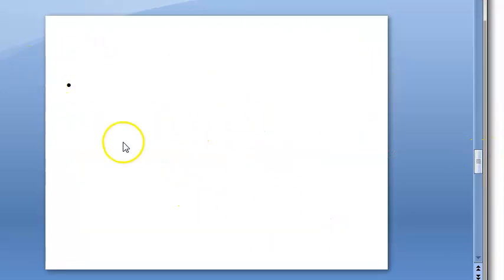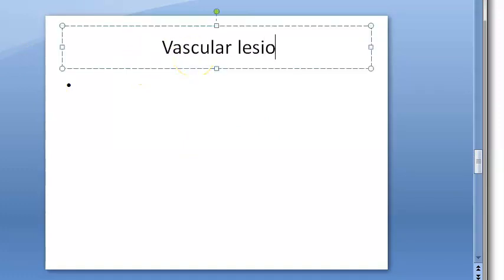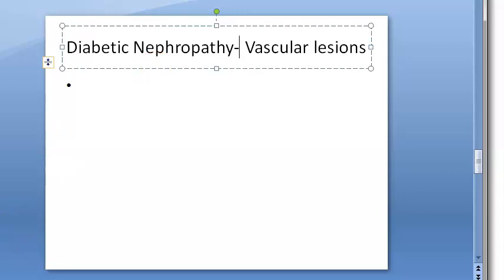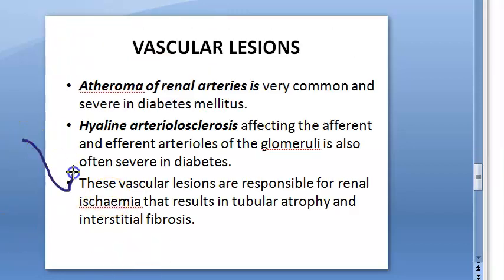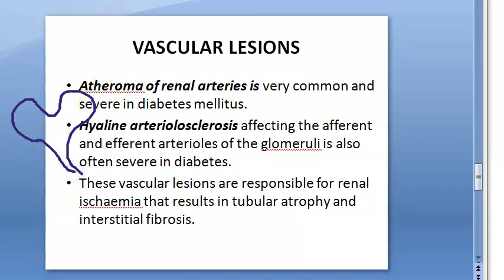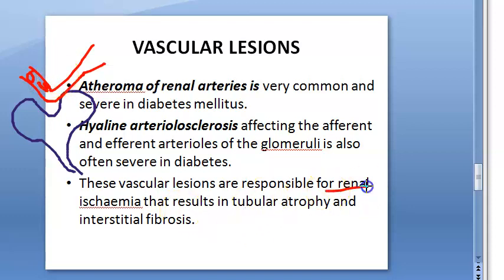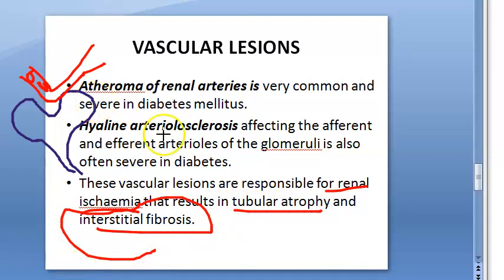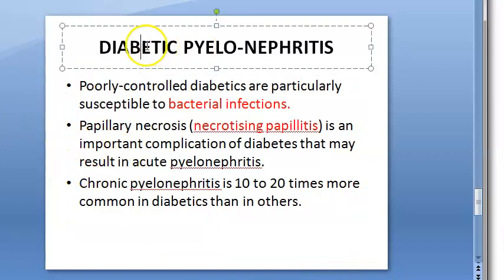Now looking at vascular lesions of diabetic nephropathy. The afferent and efferent arterioles are affected. There will be atheroma and hyaline arteriolosclerosis, leading to renal ischemia, impaired blood flow, tubular atrophy, and interstitial fibrosis — the same end result as glomerulosclerosis.